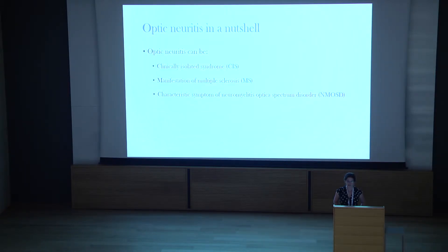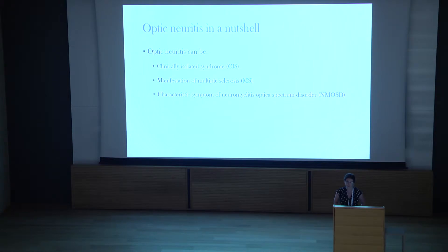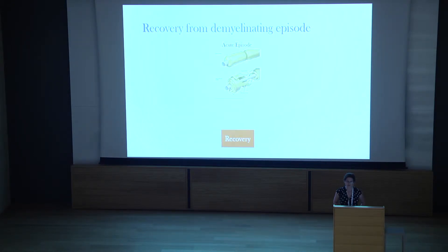Optic neuritis can appear in several forms. It can appear on its own as a clinically isolated syndrome, but can also be a manifestation of multiple sclerosis, MS, and it is also a characteristic symptom of another inflammatory disease called Neuromyelitis Optica Spectrum Disorder, or NMOSD. Recovery from a demyelinating attack usually includes remyelination, the rebuilding of the myelin sheath, but as we and others have suggested in the past, it may also be facilitated by compensatory mechanisms.